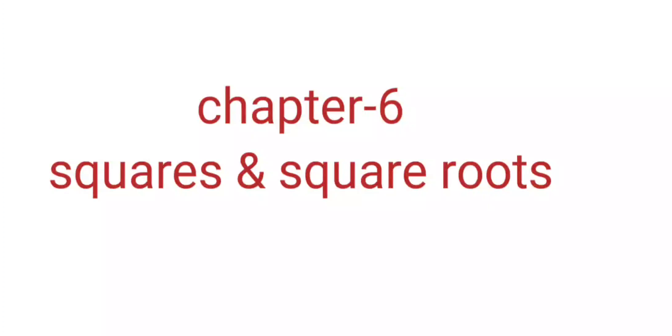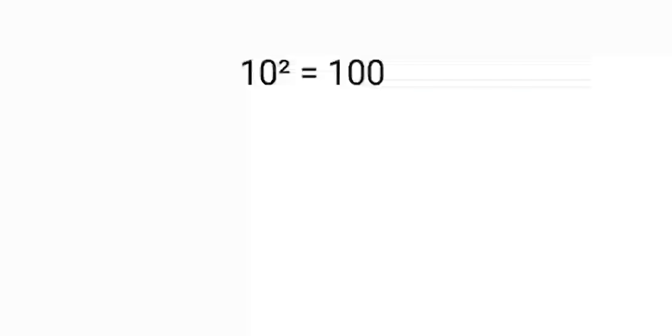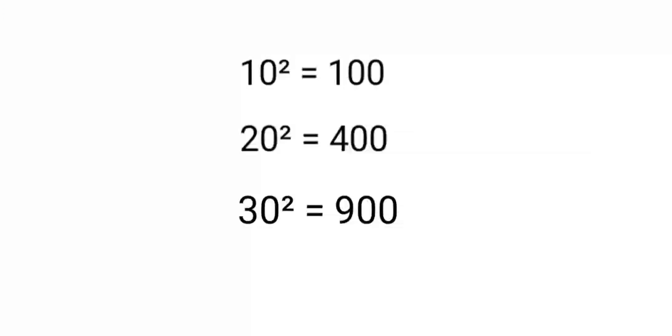Hello students, let's discuss Chapter 6 — Squares and Square Roots. In this section we are going to discuss some patterns of math. So let's start. 10 squared equals 100, 20 squared equals 400, and 30 squared equals 900.